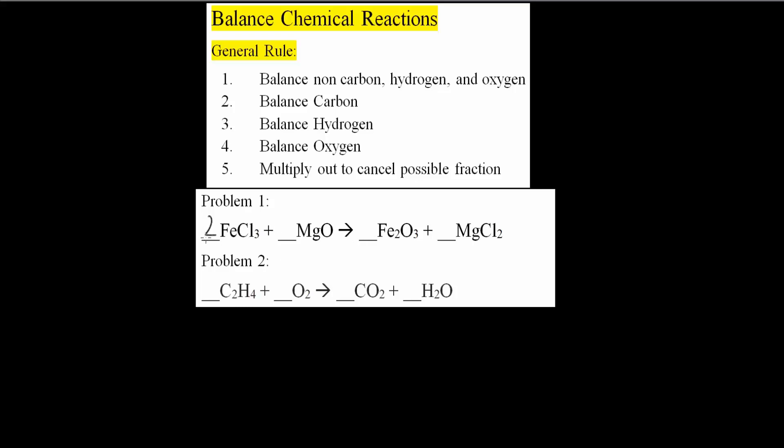Next, because we put a 2 here, we have 2 times Cl₃. So we have 3 Cls, so 3 times 2 is 6. And so in order to balance out the 6, I need to put a 3 right here because 3 times 2 is 6. So now chlorine is balanced.